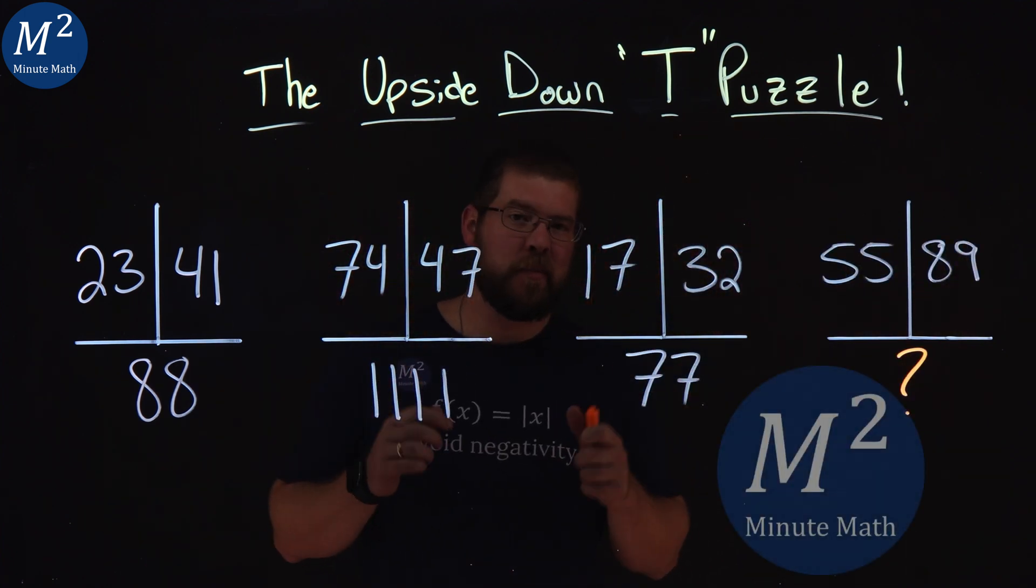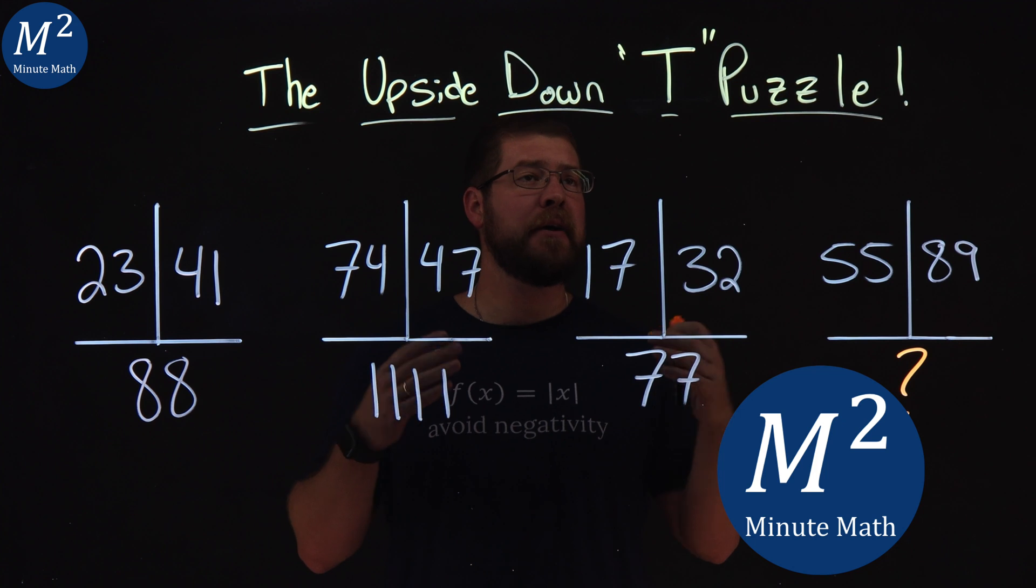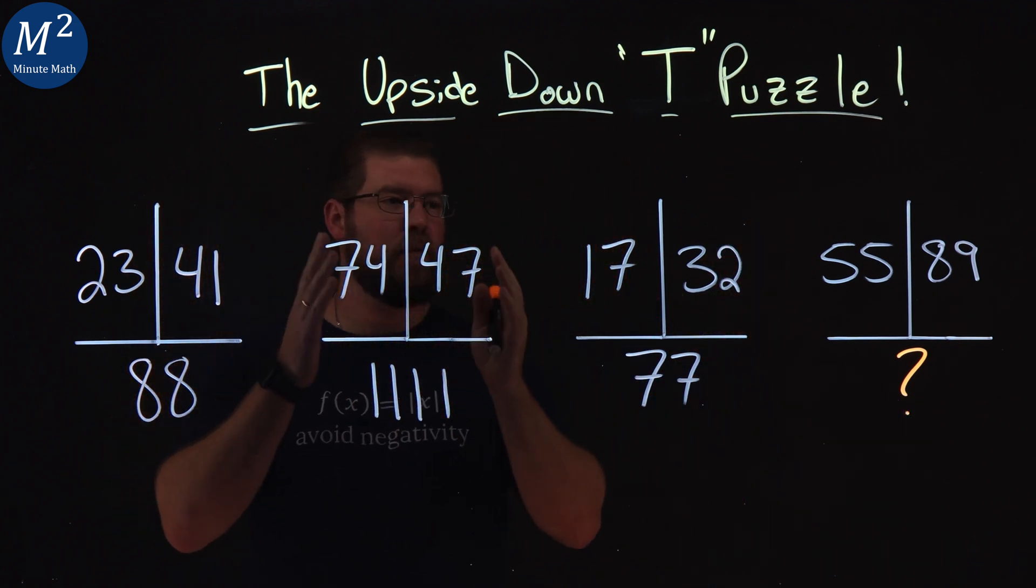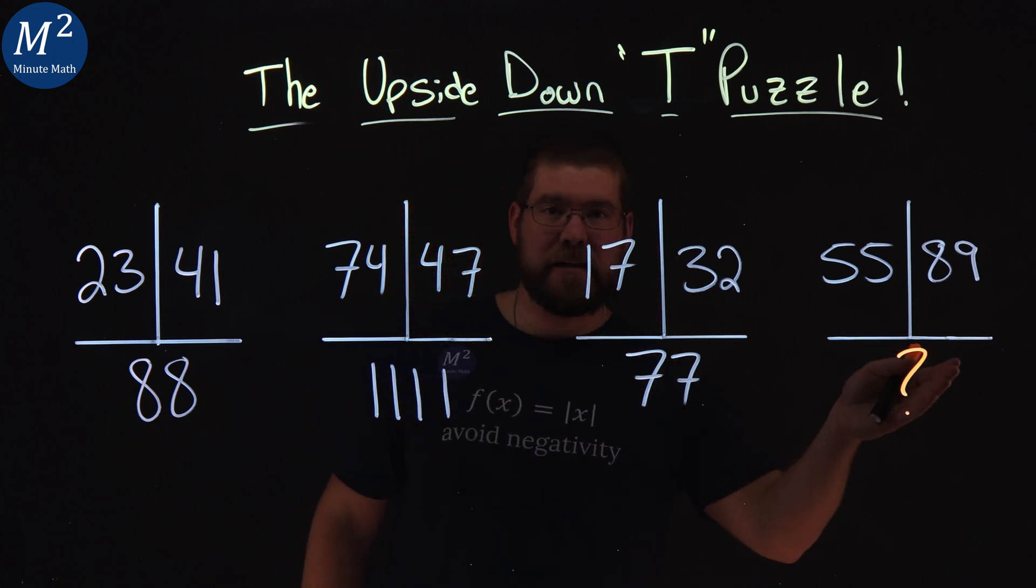Hi, I'm Sean Gannon and this is Minute Math. And we have the upside down T puzzle. The puzzle is this. Each section has three numbers and we find the last missing number.